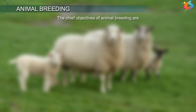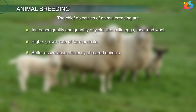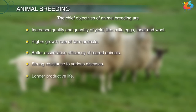The chief objectives of animal breeding are: increased quality and quantity of yield like milk, eggs, meat, and wool; higher growth rate of farm animals; better assimilation efficiency of fed animals; strong resistance to various diseases; longer productive life; and higher acceptable reproductive rate.